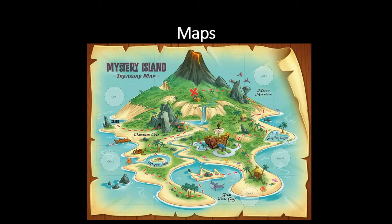This is my favourite type of map. It is a treasure map for Mystery Island. It shows us where we need to start. We then have to follow the dotted line around the island to get up here to where the treasure is on the mountain.